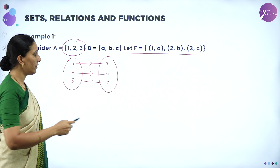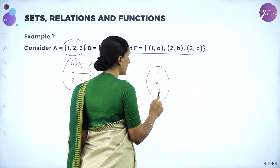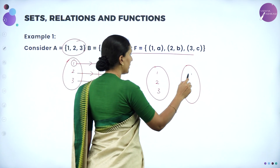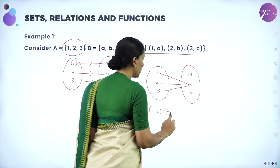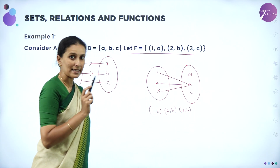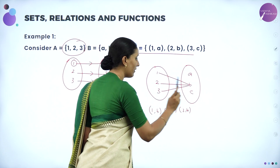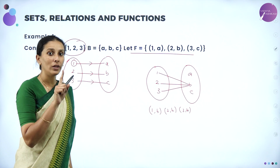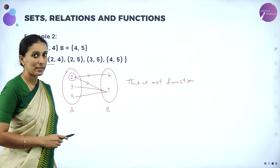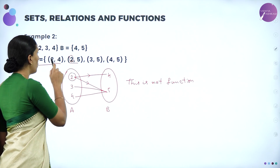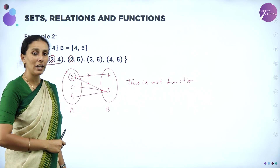When defining a function, all elements should have their unique values. Consider set {1, 2, 3} mapped to {A, B, C} where 1, 2, and 3 are all connected to B — that is, ordered pairs (1,B), (2,B), (3,B). This is a function because 1 has only one image B, 2 has only one image B, and 3 has only one image B. Compare this with the case where 2 has both 4 and 5 as images — one element cannot have two different images in a function. That is just a relation, not a function.